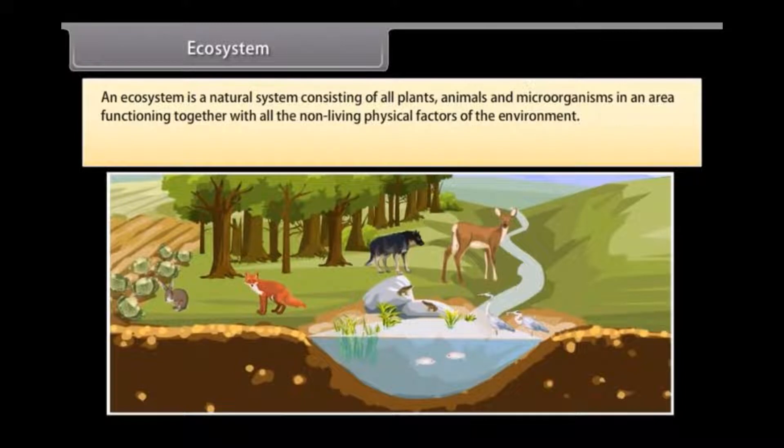An ecosystem is a natural system consisting of all plants, animals and microorganisms in an area functioning together with all the non-living physical factors of the environment.